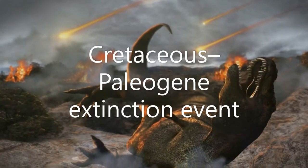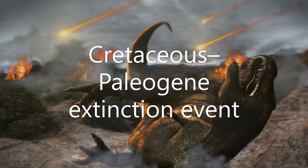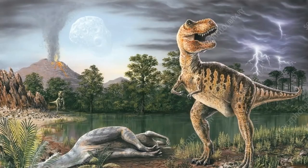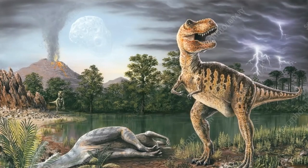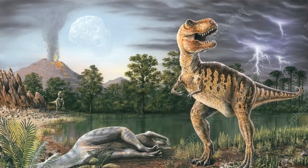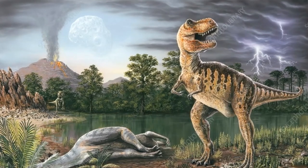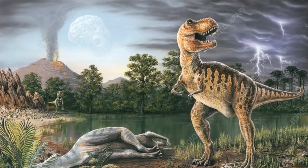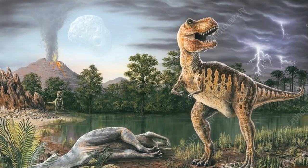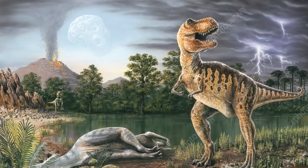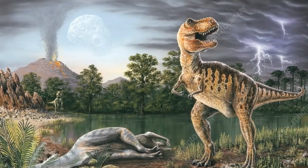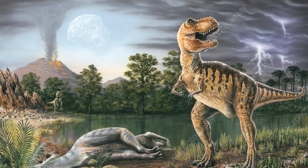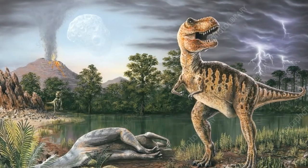The Cretaceous-Paleogene Extinction Event was likely started by a climate change that depleted all foods and plants, a volcanic eruption, or a meteoroid impact. It may have killed 80% of all species at the time.